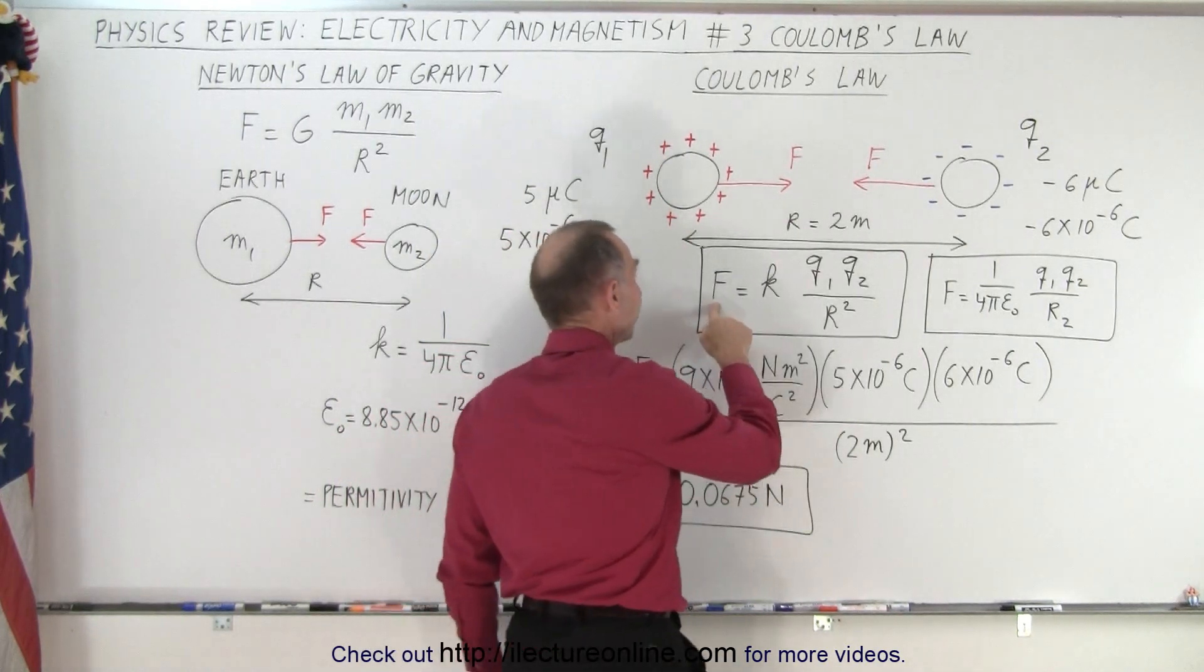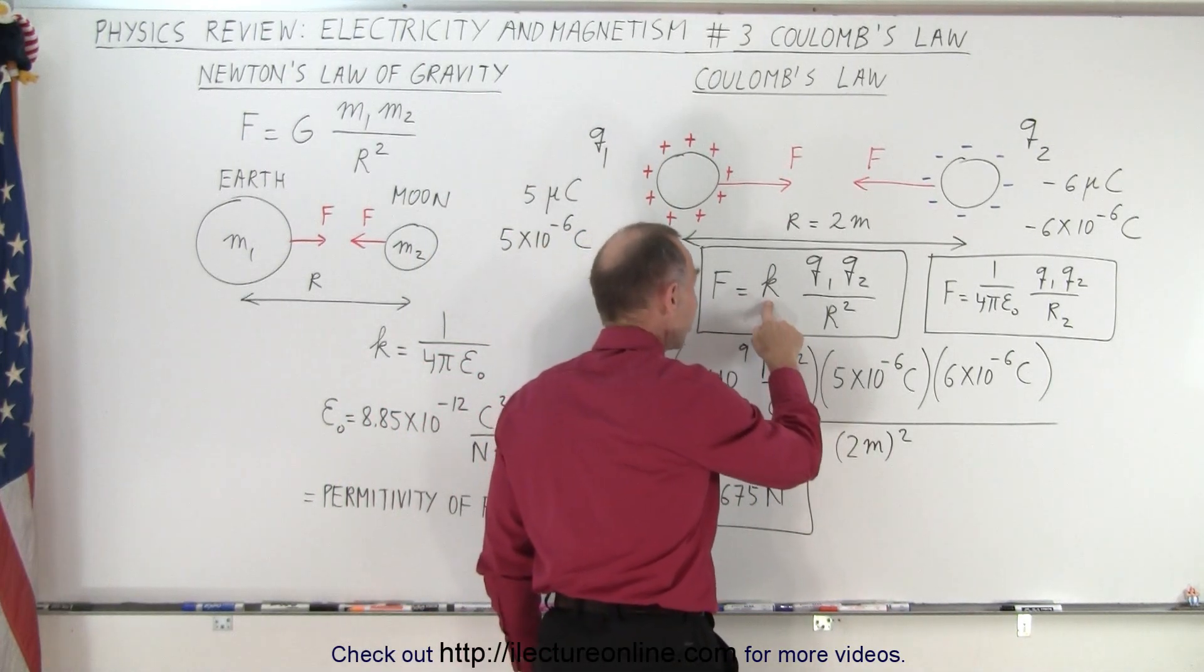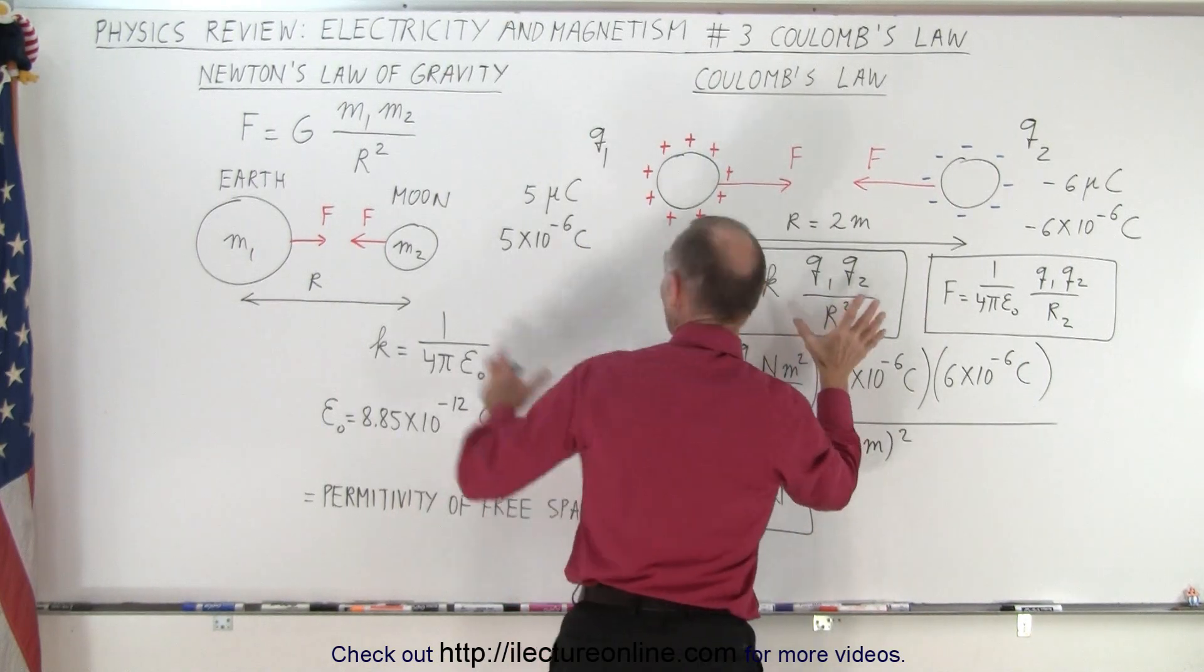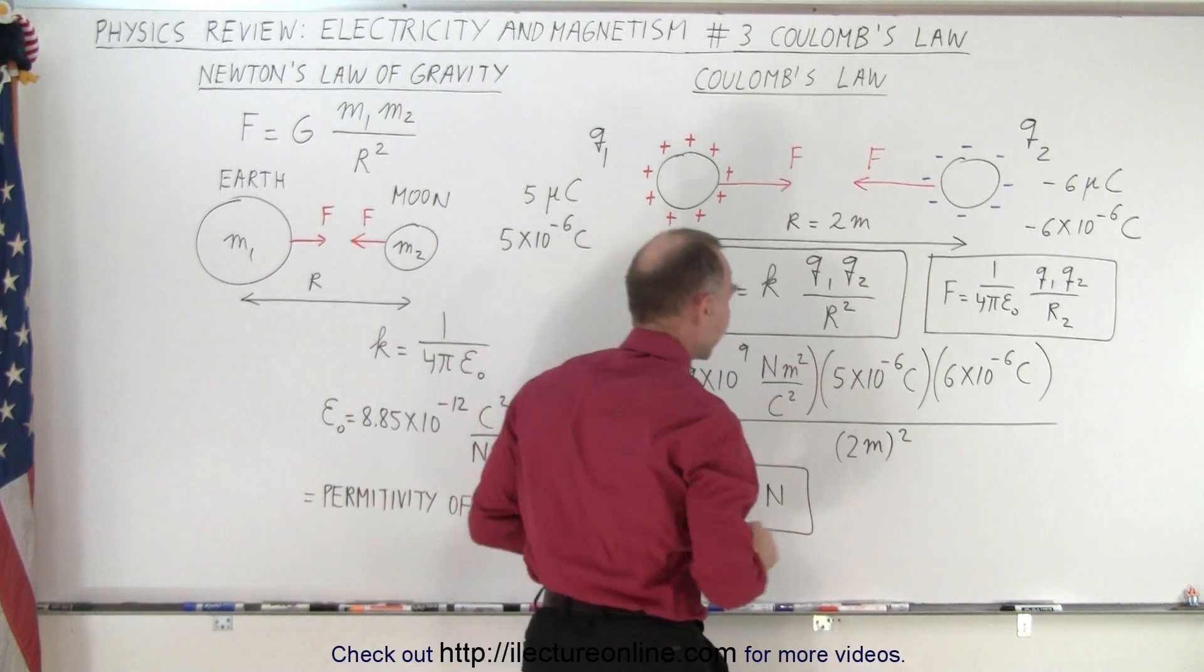So when we look for the magnitude of the force, that is equal to a constant, let's call it K, times the product of the two charges divided by the distance squared. So you can see that the format is exactly the same.